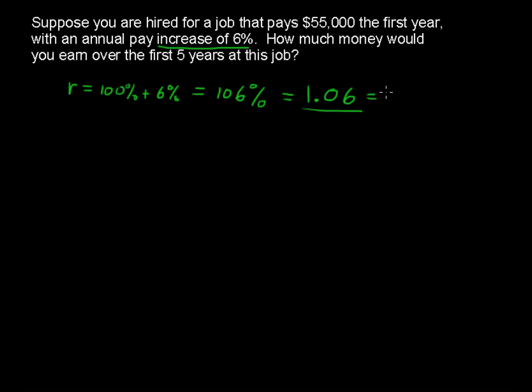So that equals our r. Multiply $55,000 by 1.06, and you'll get your salary for the second term, or the second year.